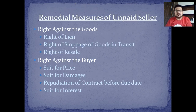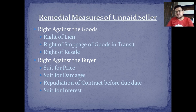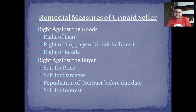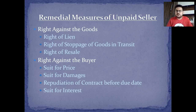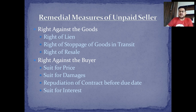The remedies for an unpaid seller are divided into two categories: rights against the goods and rights against the buyer. Rights against the goods include: right of lien — I still own and can retain the goods; right of stoppage of goods in transit — I can stop goods that are travelling; and right of resale — I can sell the goods to someone else.